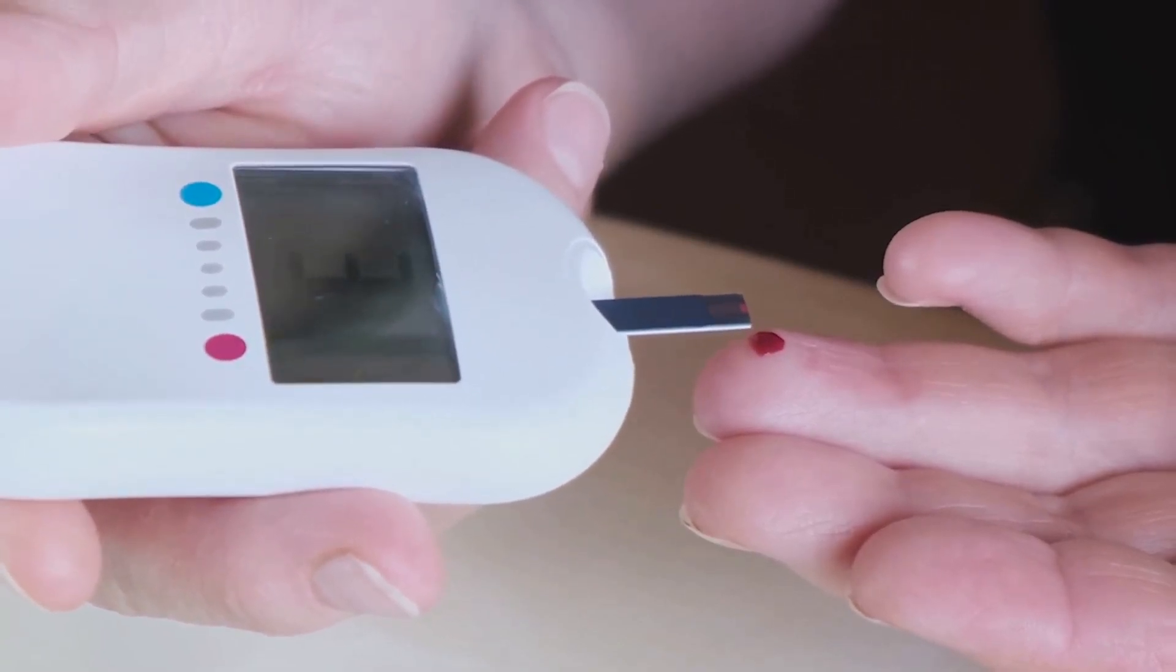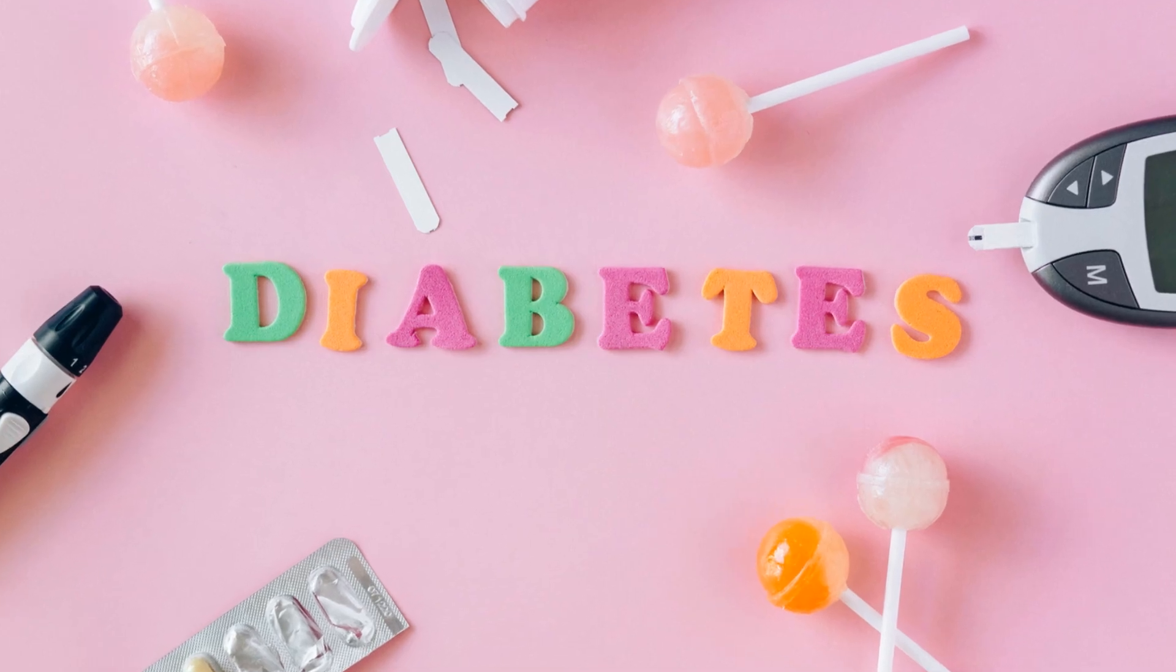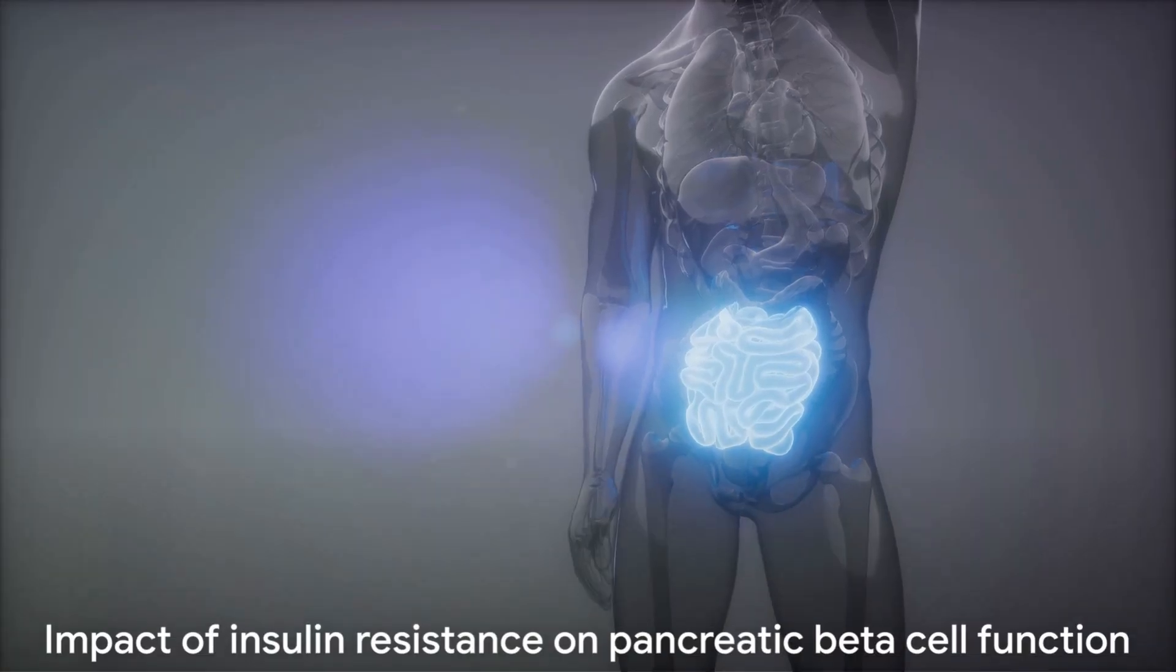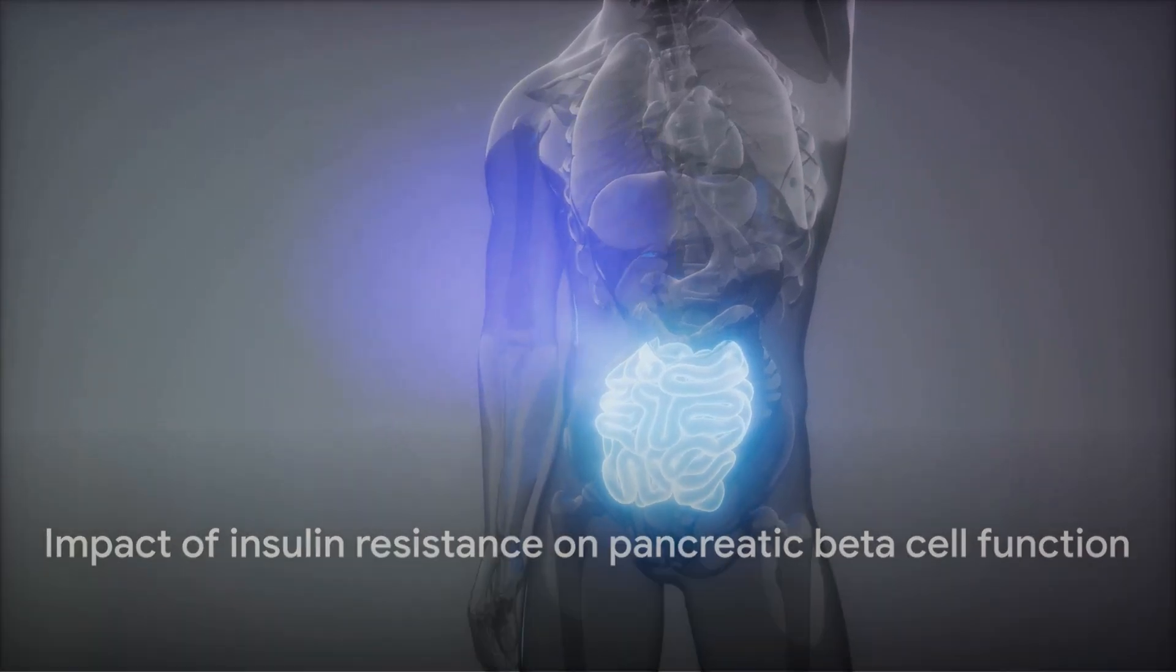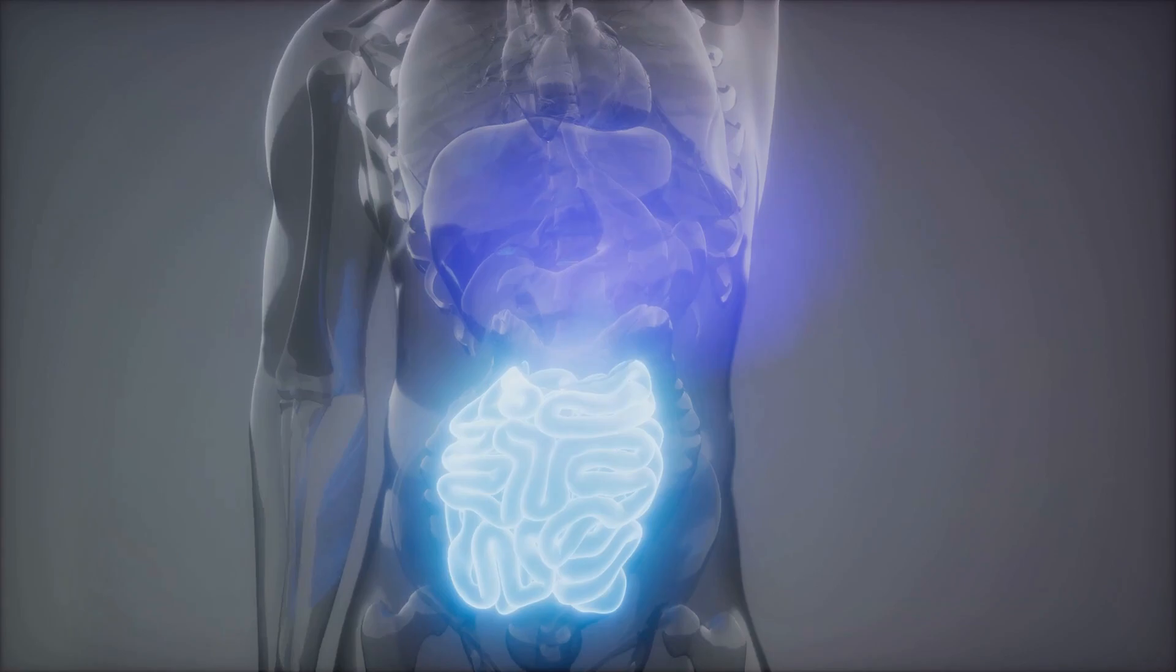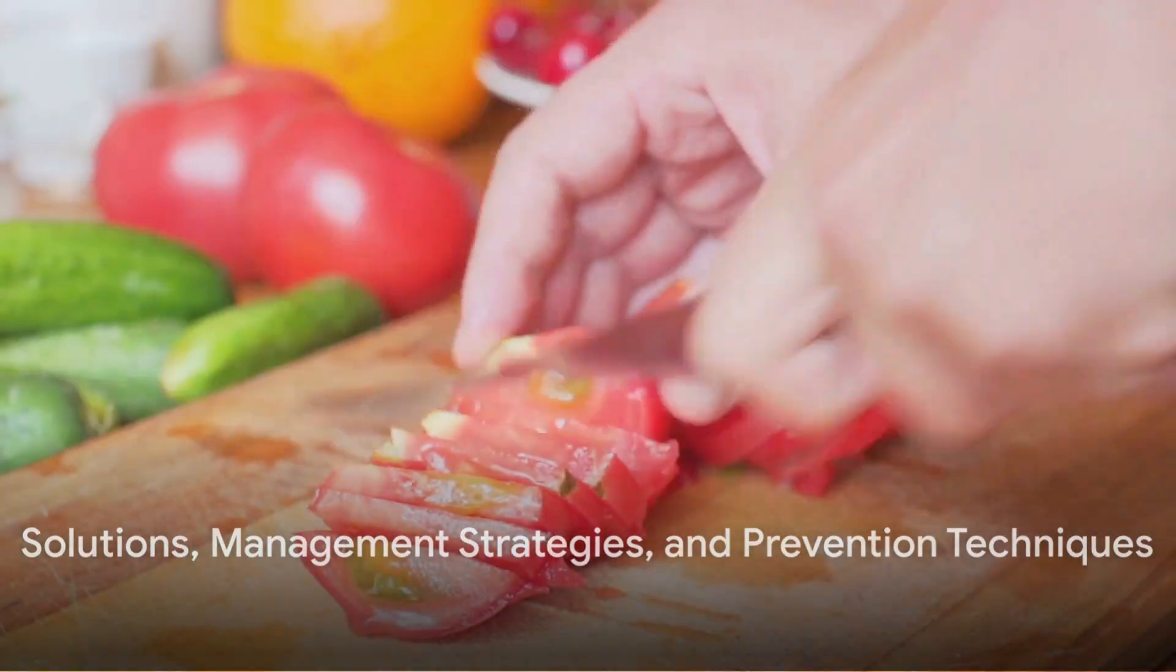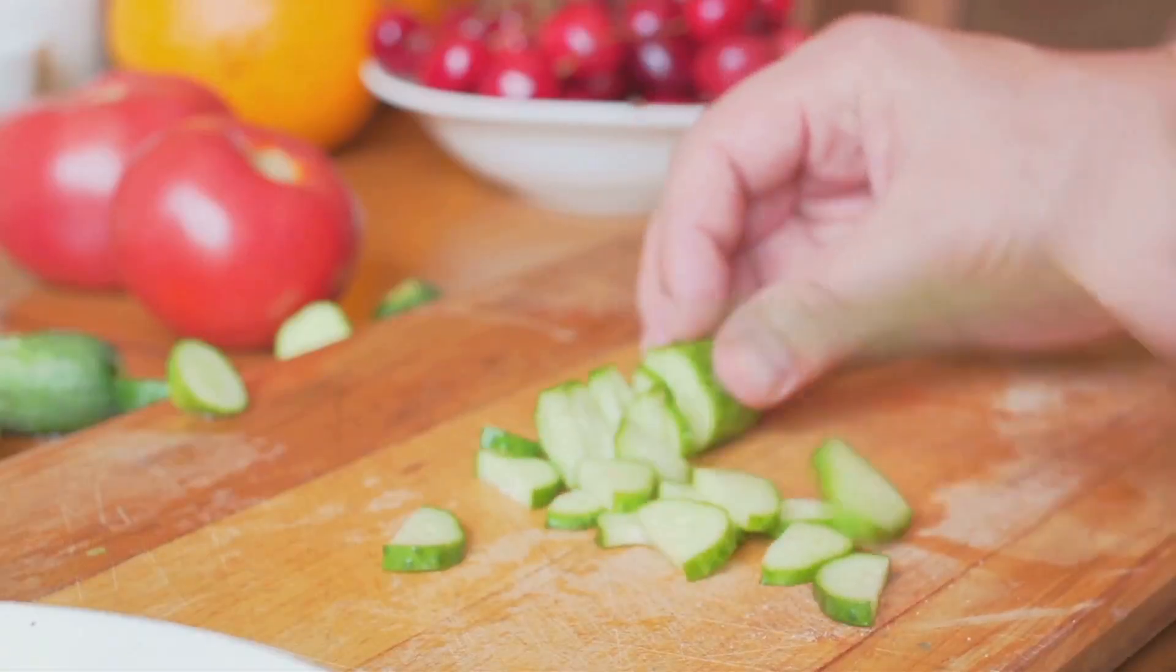Lastly, we have incretin resistance. Insulin resistance can also affect the body's response to incretins, hormones that stimulate insulin release. This can create a cycle where the body needs more insulin but isn't able to produce it effectively. These are just a few examples of how insulin resistance can affect pancreatic beta cell function, leading to numerous health complications.